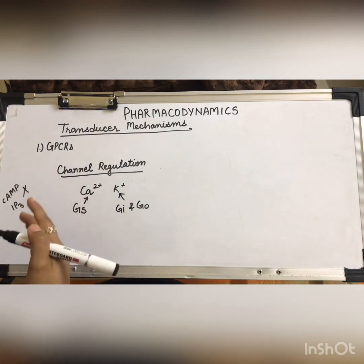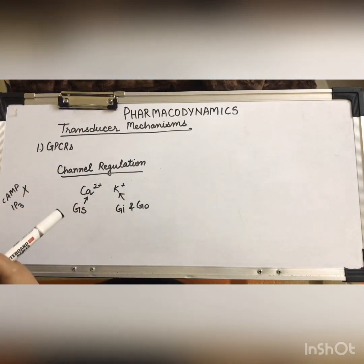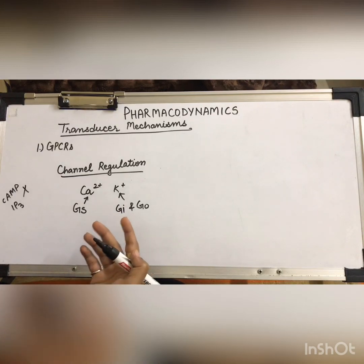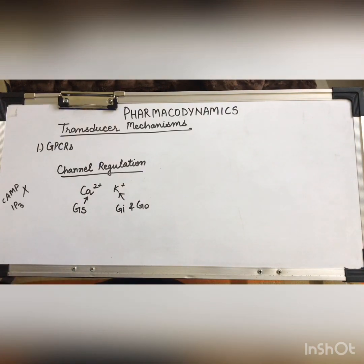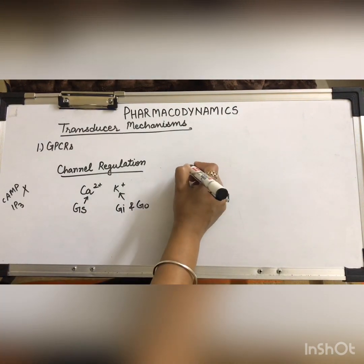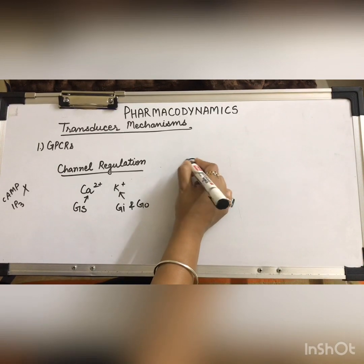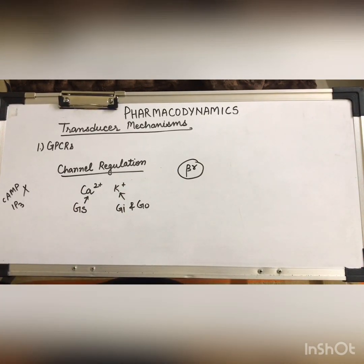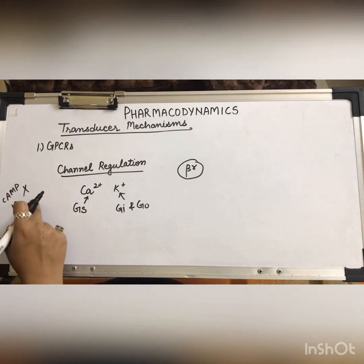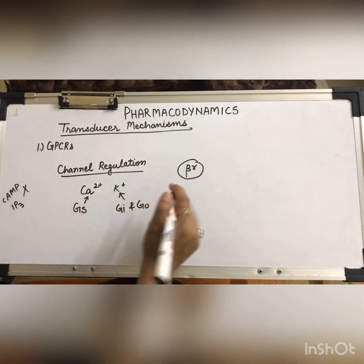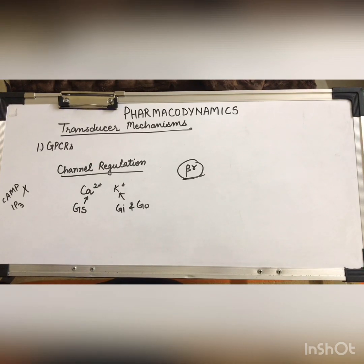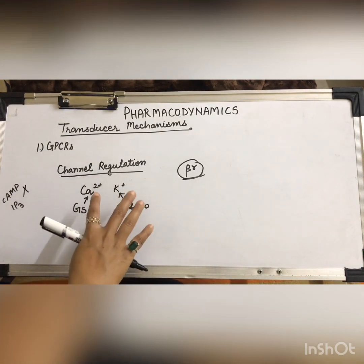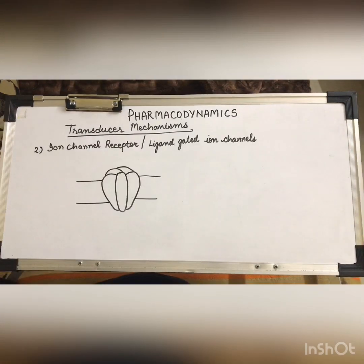Gs proteins act on calcium channels and open them, whereas Gi and Go proteins open the potassium channels. This can bring about depolarization, repolarization, or hyperpolarization of the cell. These channel openings and closings are the function of the beta-gamma dimer, since the alpha subunit was involved in second messenger production. The dissociated beta-gamma dimer goes directly to the ionic channel and either opens or inhibits it.